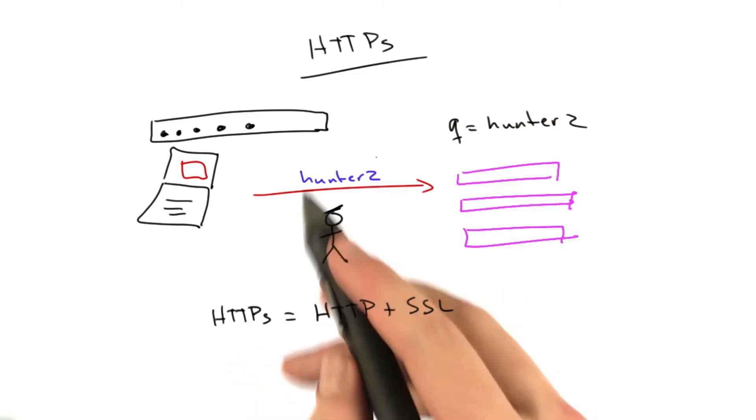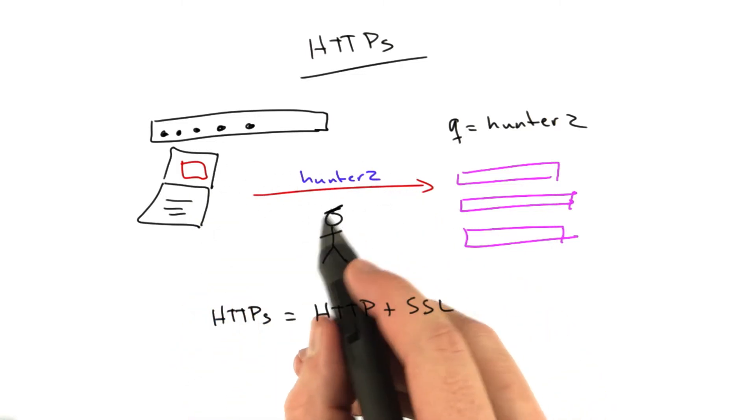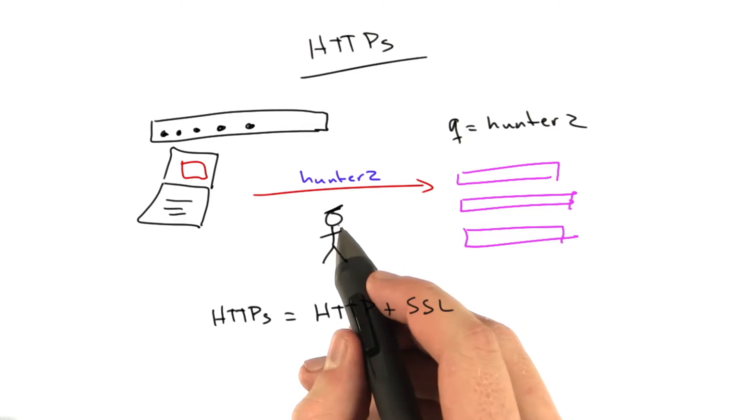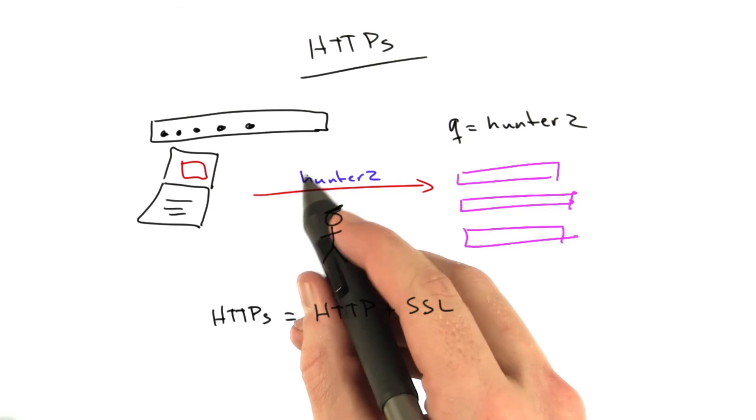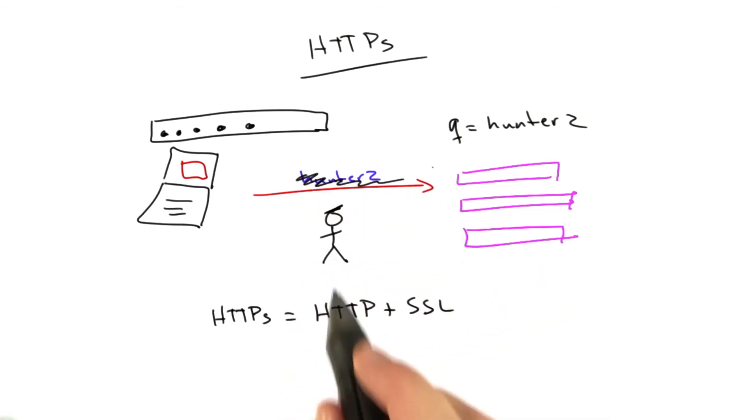That means this whole communication is encrypted, so this man in the middle, in theory, unless he's hacked VeriSign, and they'd never get hacked, can't see what's being transmitted over the wire. So it's all gobbledygook to him.